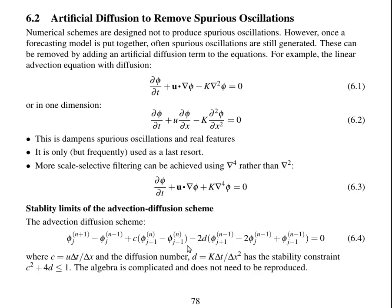So this combination is stable so long as c squared plus 4d is less than or equal to 1. The c is the Courant number, and d is the non-dimensional diffusion coefficient or diffusion number, which is k delta t over delta x squared. So it's worth coding this up to experiment with it to see how much diffusion is needed to control the oscillations associated with this centred-in-time, centred-in-space advection, and whether hyperdiffusion does a better job than del-squared diffusion.